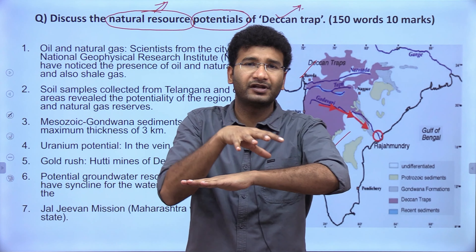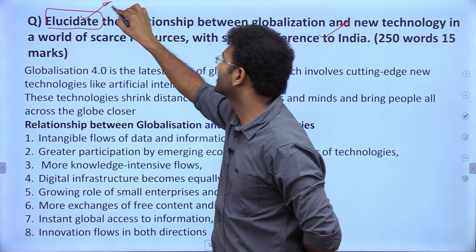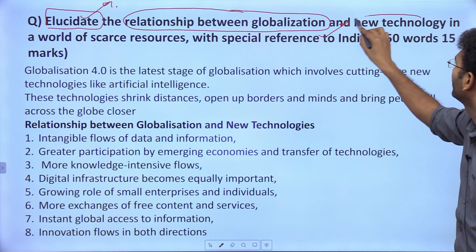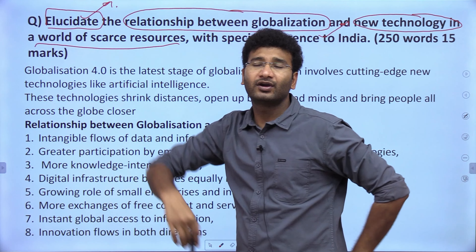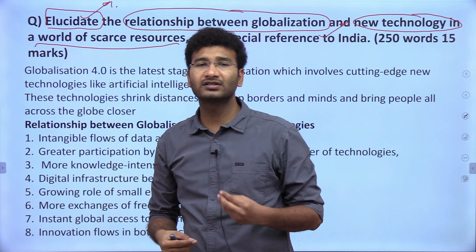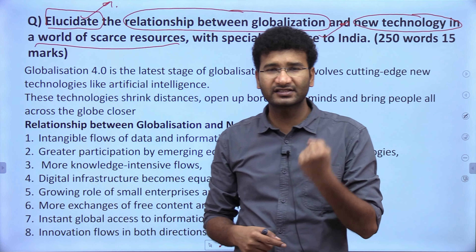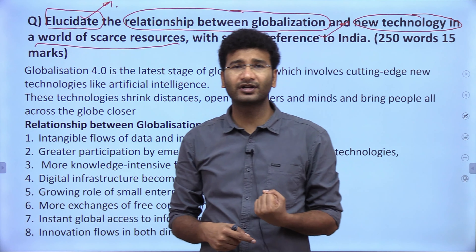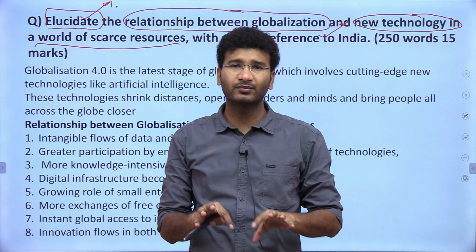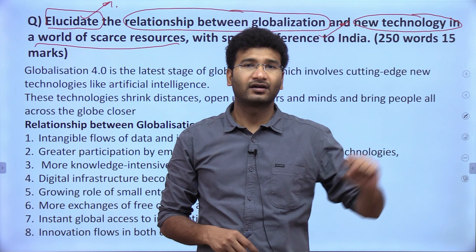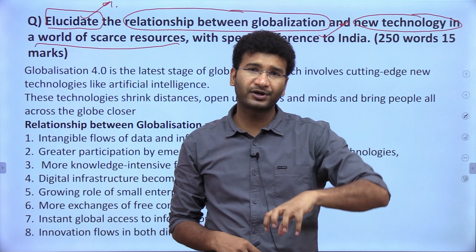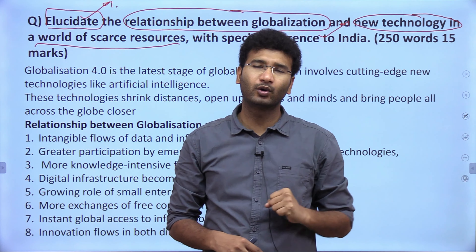The last question: 'Elucidate the relationship between globalization and new technologies in a world of scarce resources, with special reference to India.' You have to elucidate — which means give examples. Globalization has phases, and the current phase is called Globalization 4.0, which involves cutting-edge technologies, artificial intelligence, and machine learning. These technologies shrink distances — for example, performing surgery from India on a patient in Africa using AI and machine learning. Barriers of travel and transportation of resources have been reduced.